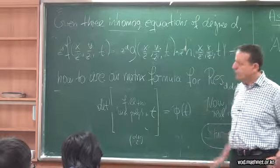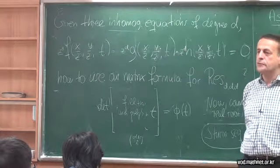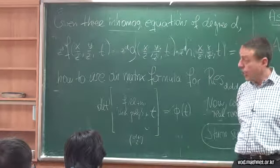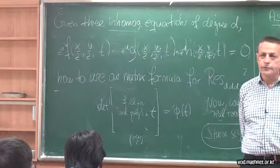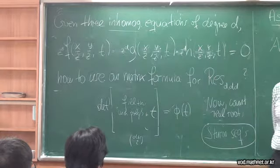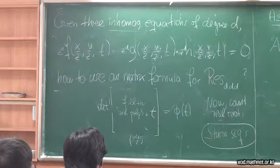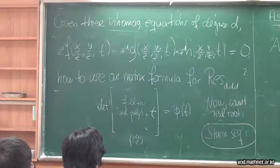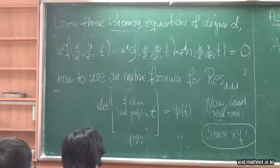Even if the matrix is large — say 100 by 100 — you will not be able to evaluate the determinant symbolically in Mathematica or Maple. However, you can quickly get the determinant anyway using interpolation: you specialize a bunch of values of t. All of this can be done much faster than applying Gröbner bases to the original system.